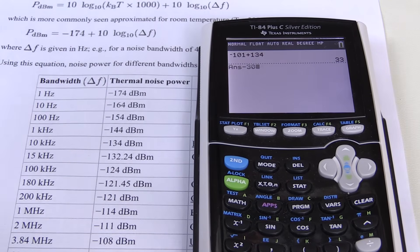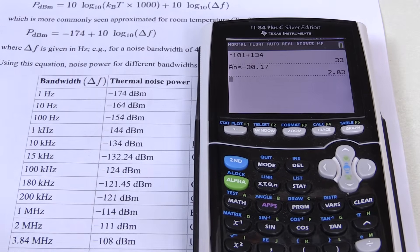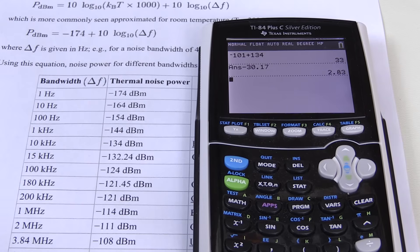So part of this 33 dB here is going to be the gain on its own. And we know how much. Namely, 30.17. So we just subtract that. And that's our noise figure. 2.83 dB. It's the noise figure that we have determined here. It's as simple as that.